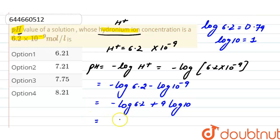So from here it will be minus 0.79 plus 9, and the value of log 10 is 1. So the value of pH is 8.21 and the correct option here will be option fourth.